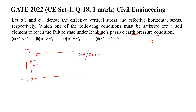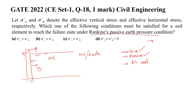The pressure exerted from the soil or earth on the retaining wall is called earth pressure. There are three types of earth pressures: active, passive, and at rest. The pressure acting on the wall when the wall is moving away from the soil is called active pressure. When the wall is moving towards the soil, the pressure in the soil element is called passive earth pressure. When the retaining wall is not moving at all, that is called the at-rest condition.